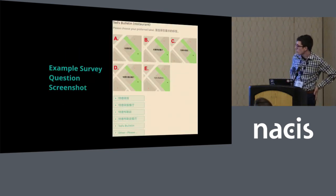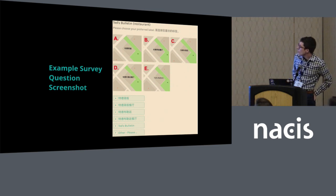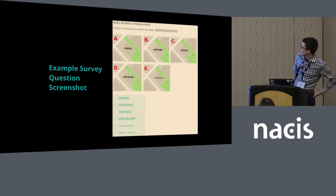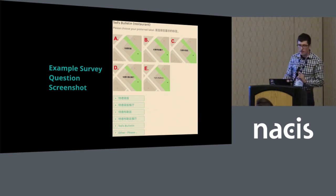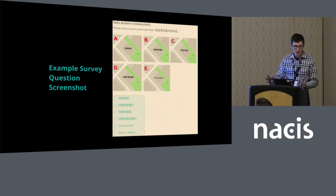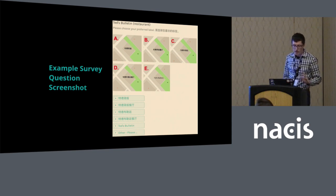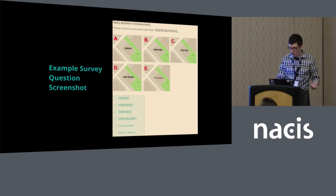Finally, there was also an 'other' option where participants could specify their preferred choice if it wasn't in the given labels. So this is what the survey looked like: speakers of Mandarin would see the English label, a very short description at the top, then map previews showing the label on a map, and multiple choice options corresponding to those maps.